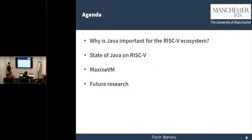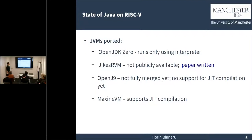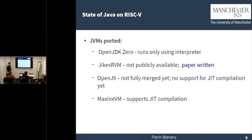Next, we're going to talk about the state of Java on RISC-V. So far, there have been a couple of JVMs supported. There is OpenJDK, but this runs only using the interpreter. There's JxRVM, which is not publicly available and also doesn't support JIT compilation. It only has the interpreter. Then there's MaxineVM, which supports JIT compilation.